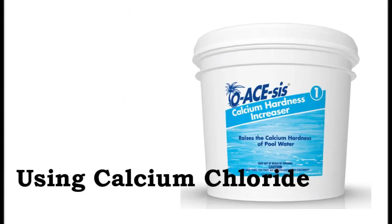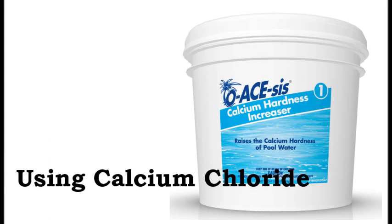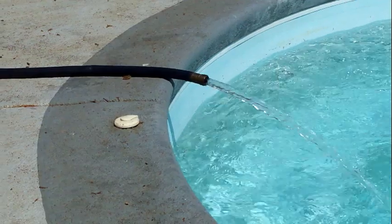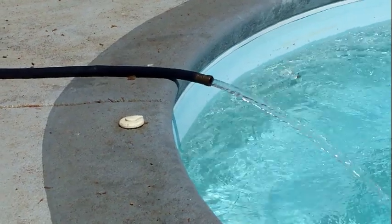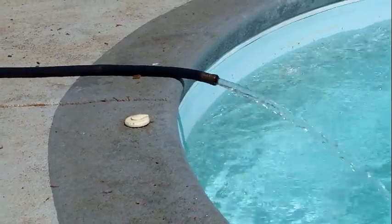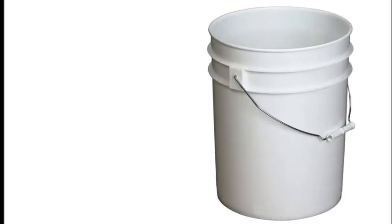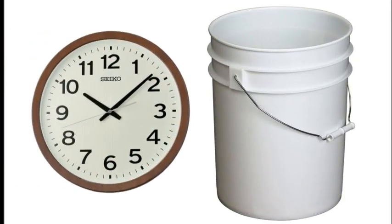Next is the use of calcium chloride. This is used to raise our calcium hardness, which should be kept between 200 to 400 parts per million. Calcium chloride is great when you have soft water and need to raise it to the right level. If your fill water is already hard, there's really no reason to use it. If you need to add calcium chloride, I recommend adding it in stages, a little bit at a time over a few days. This will allow it to dissolve so we're not making one huge chemical adjustment all at once.